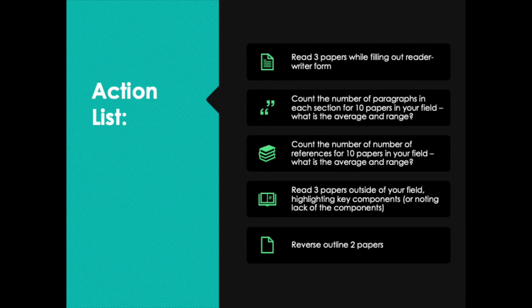The fourth action item is to read three papers that are outside of your field — a completely different topic than what you normally work on. If you research animals, find some papers about plants; if you research plants, find papers about geology or whatever is completely different from what you do. Read through them and find the same key elements you were looking for in action item one. Doing this outside your field is useful because you're focused on how the paper was structured, not distracted by the scientific details.